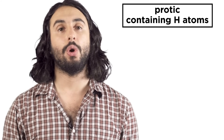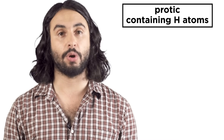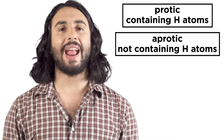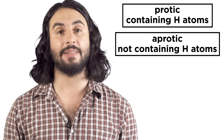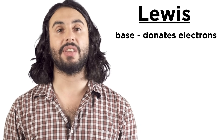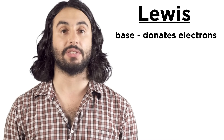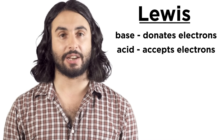The Bronsted-Lowry definition only applies to protic species, or molecules with hydrogen atoms that can be lost as protons. But there are aprotic species that also display acidity and basicity. This is what the Lewis definition entails. Under the Lewis definition, a base is something that donates a pair of electrons and an acid is something that accepts electrons.